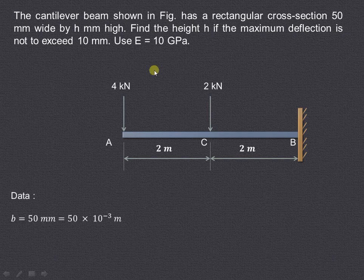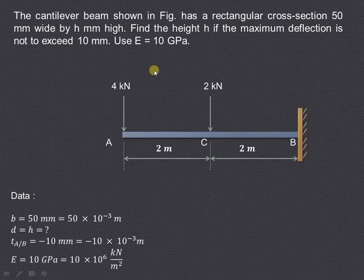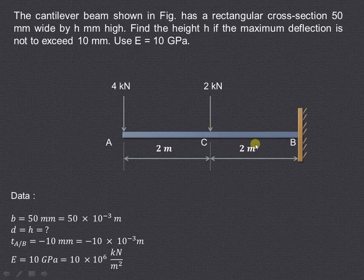Let us first write down the data given in the example. Width is 50 mm, converted to meters as 50 × 10⁻³. Depth or height h is to be found. The deflection is given as 10 mm, and since the loads act in the downward direction, the deflection is taken as negative: −10 mm, that is −10 × 10⁻³ meters. The modulus of elasticity is given in gigapascals, which we have converted to kN per meter squared by multiplying by 10⁶.